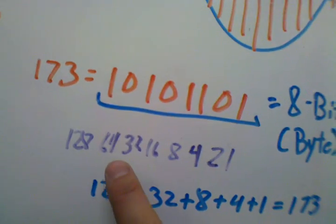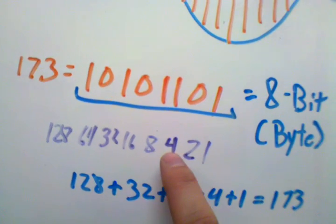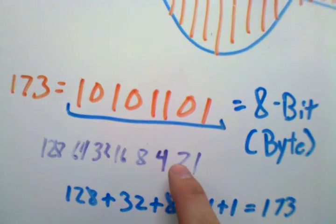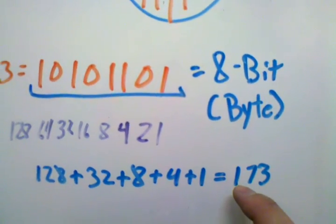We take the 128, 64, 32, 16, 8, 4, 2, and 1 — and that's how we get 173.